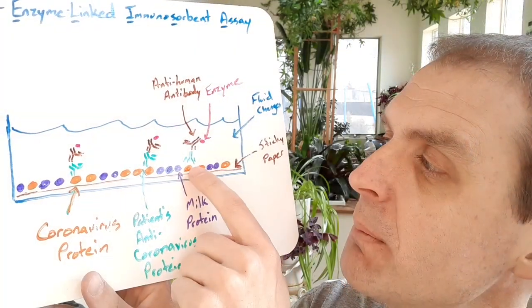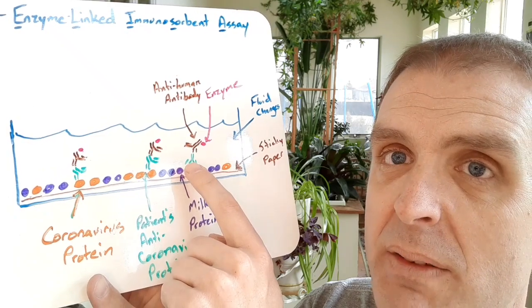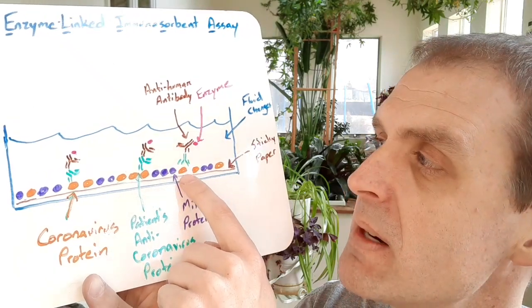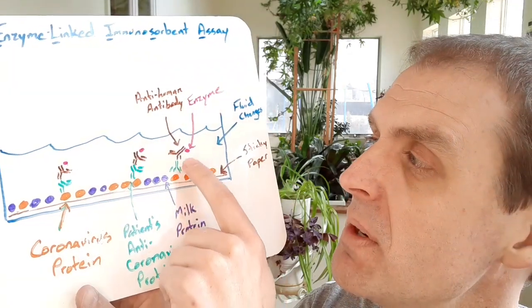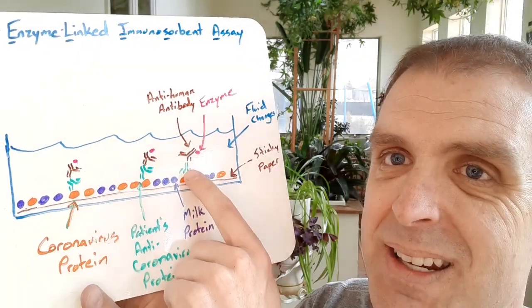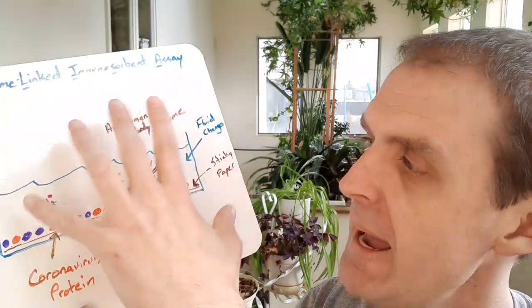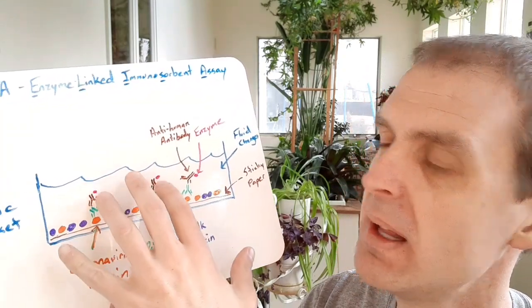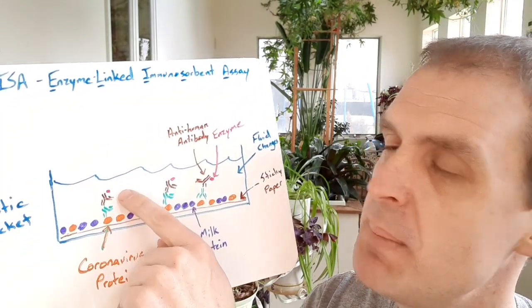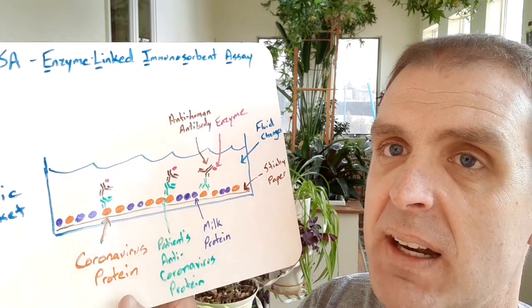The brown antibody there is an anti-human antibody. It will stick to the green antibody that stuck to the coronavirus protein in orange. So we're building a stack here: from coronavirus protein, to the antibody from the patient that could detect the coronavirus protein, to the next protein, which is called the secondary protein, which can stick to the human antibodies. And that one has an enzyme linked to it. In the final step of this assay, you add in a liquid that can be chewed up by those enzymes that are stuck to the secondary antibody.